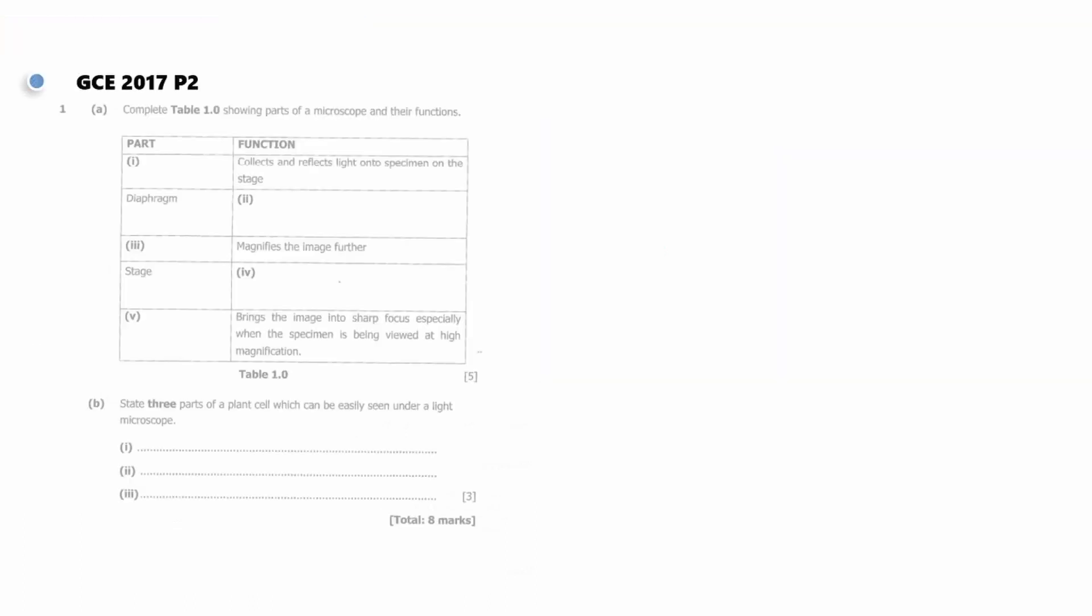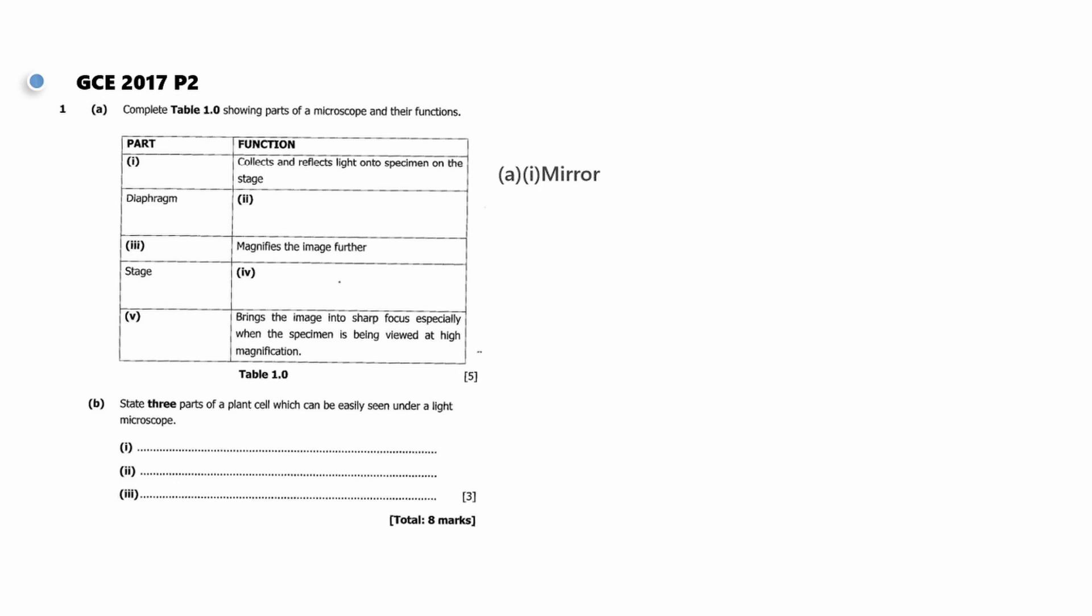The next question is GCE 2017 paper 2. Complete table 1.0 showing parts of the microscope and their functions. The first question is which part of the microscope collects and reflects light onto specimen on the stage? Answer is mirror. The second question is what is the function of the diaphragm? It controls the amount of light reaching the specimen.